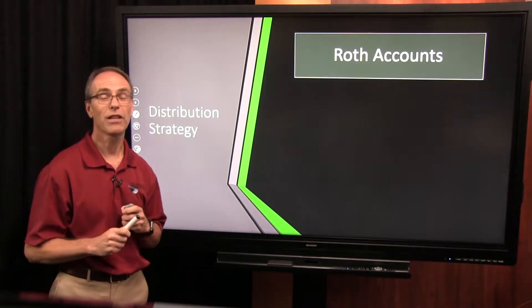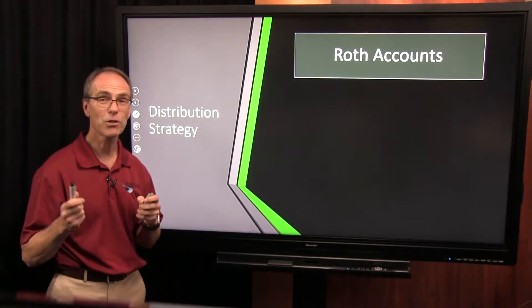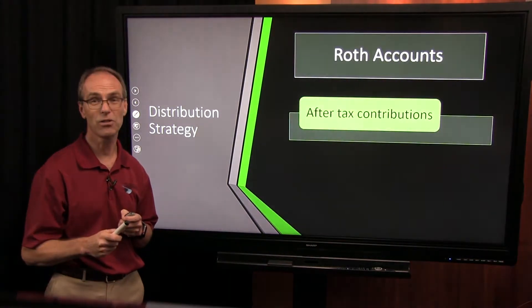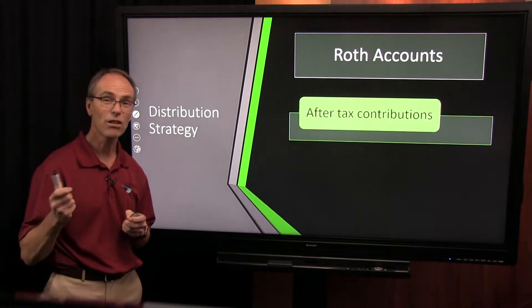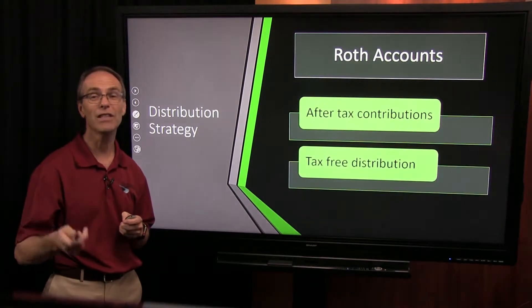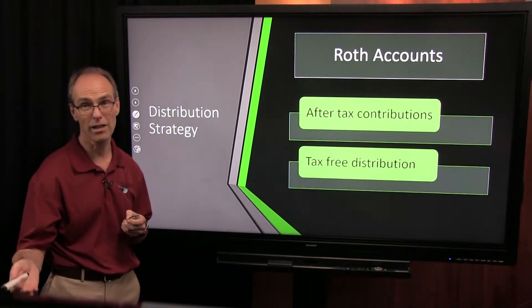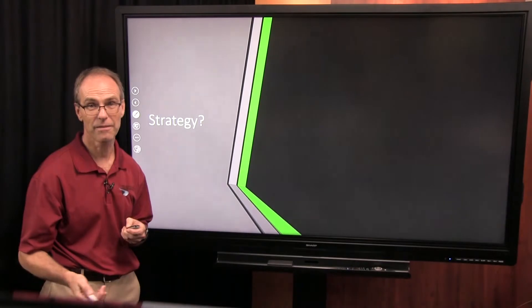Then you have Roth accounts, where after-tax money goes in. It grows without tax, and then you have a tax-free distribution on the back end.